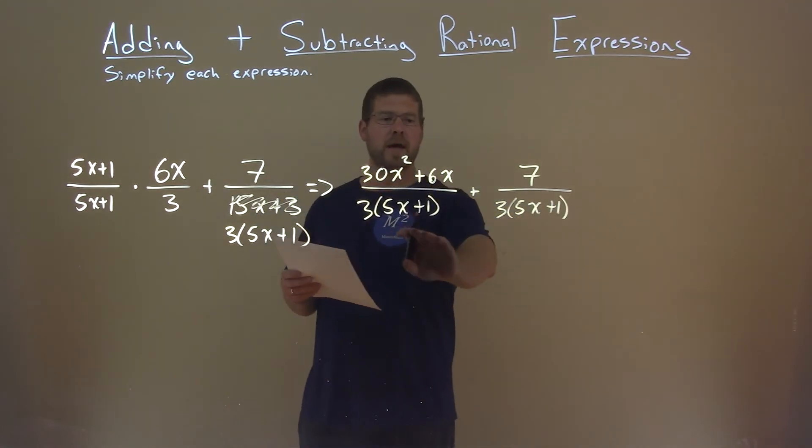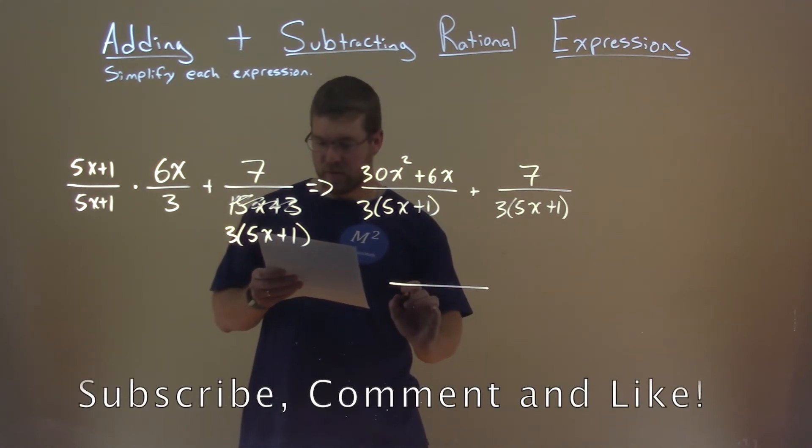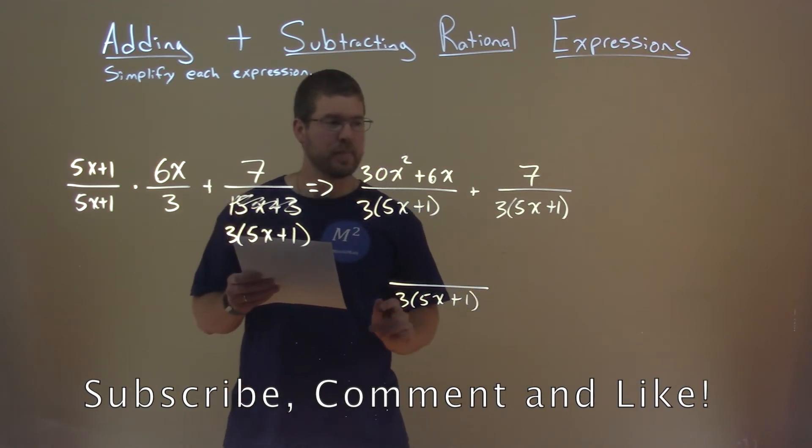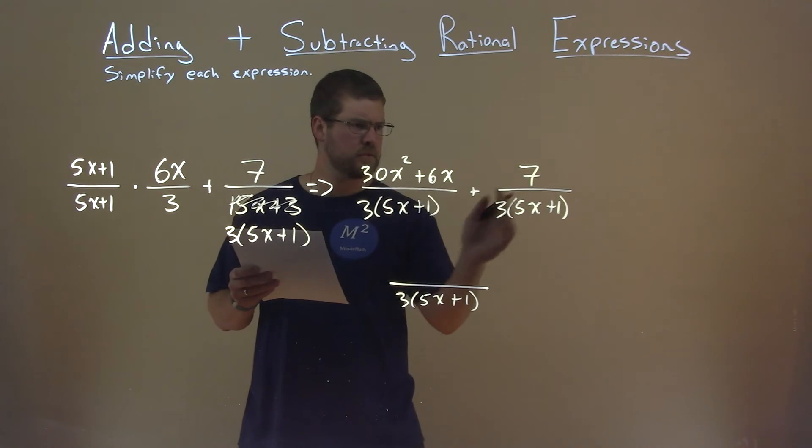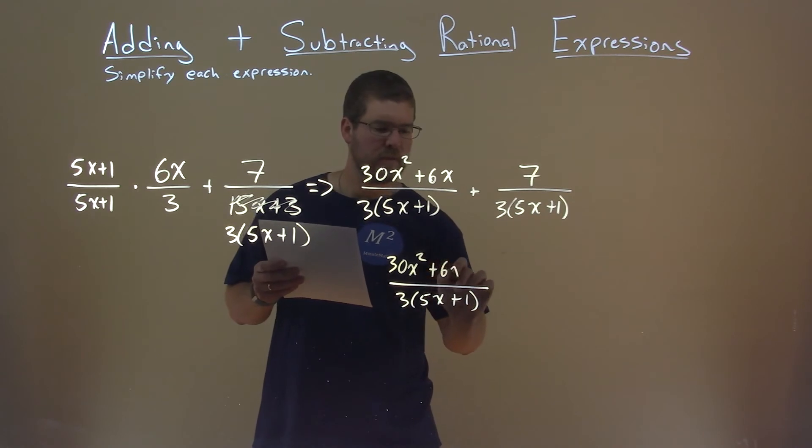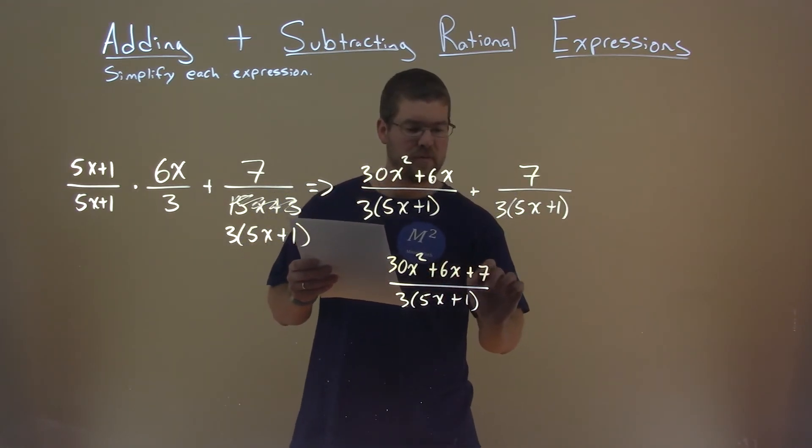We now have the same denominator, so we can write this as one fraction. We have 3 times 5x plus 1 in the denominator, and let's add our numerator. Well, 30x squared has no like terms, so we have 30x squared here. 6x has no like terms, plus 6x. 7 by itself, no like terms, plus 7.